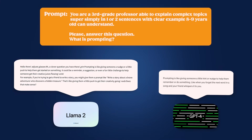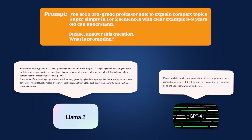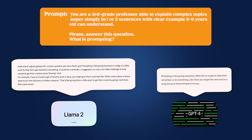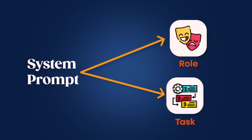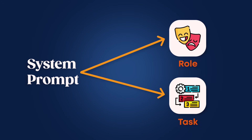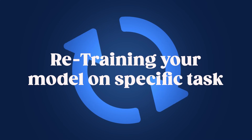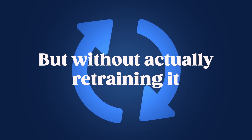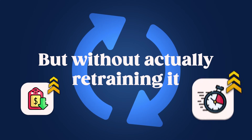The first thing to do is define a good system prompt, like asking the model to be a 3rd-grade teacher and make explanations super digestible. This system prompt basically gives a role and a task to your LLM. It's the most important part of the whole process — it's basically like retraining your model on a specific task but without actually retraining it, which saves lots of costs and time.